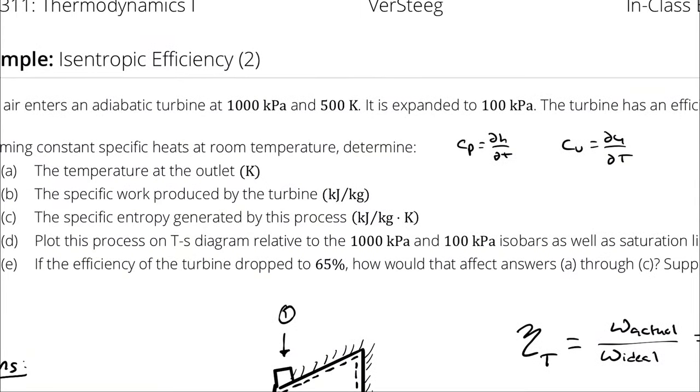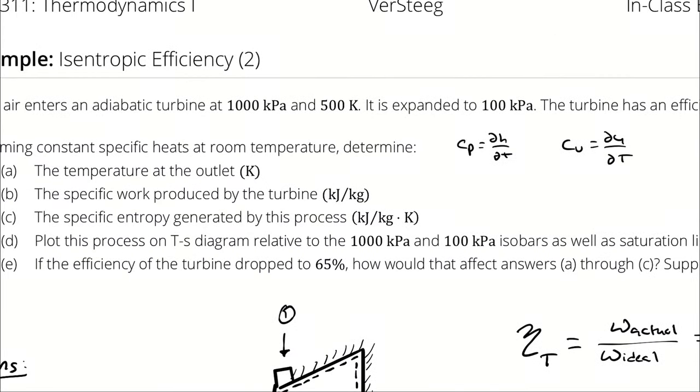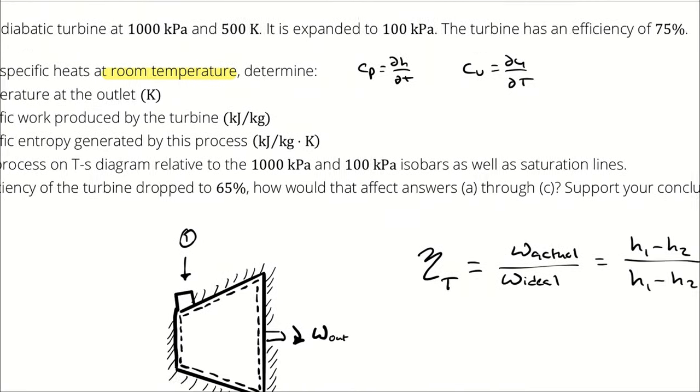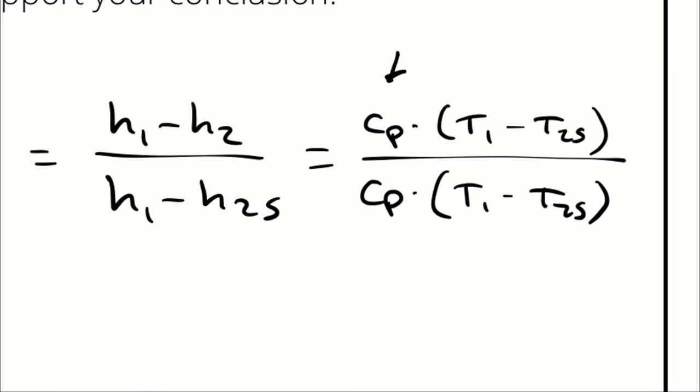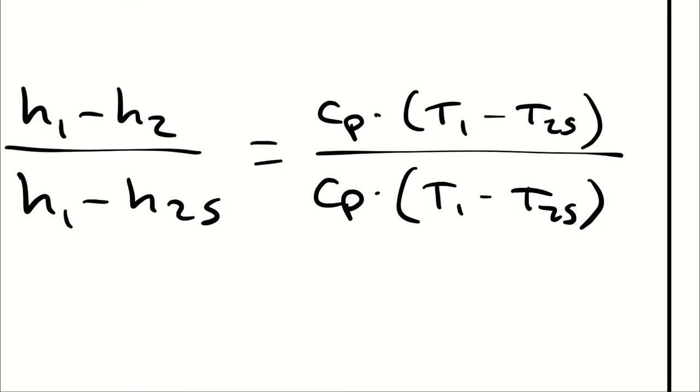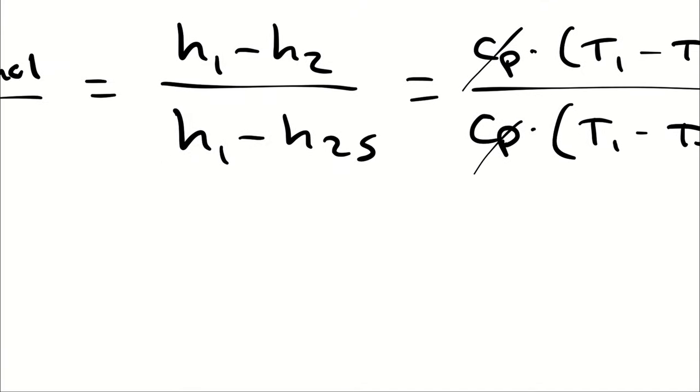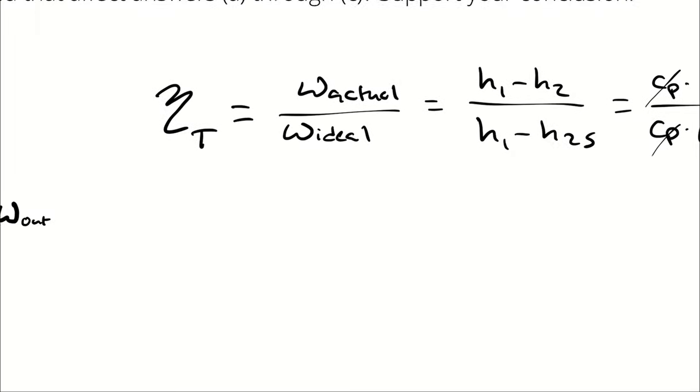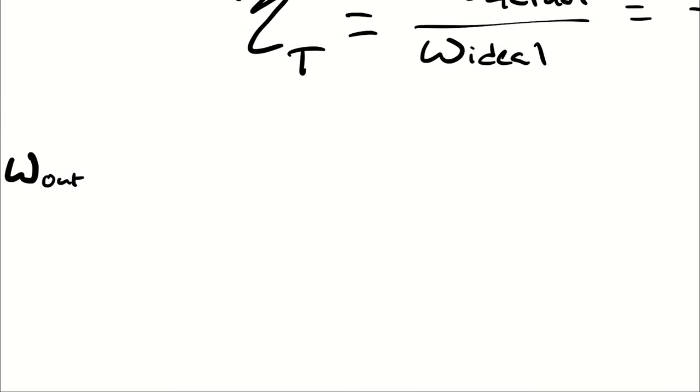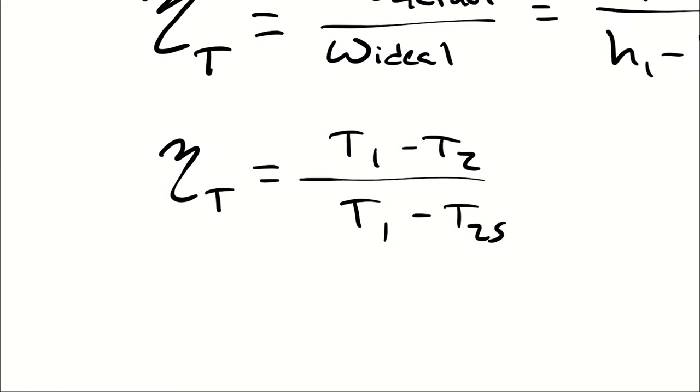Furthermore, because I was told to use specific heats at room temperature, that means that the Cp value I use is going to be the same regardless of what delta T I'm analyzing, therefore they cancel. So this particular circumstance is going to yield a relationship of eta T is equal to T1 minus T2 divided by T1 minus T2S. That is only for this specific case where I've assumed constant specific heats at room temperature.